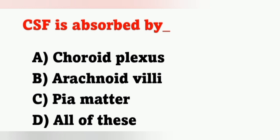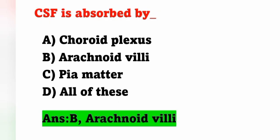Next question: CSF is absorbed by — options: option A, choroid plexus; option B, arachnoid villae; option C, pia mater; option D, all of these. Cerebrospinal fluid is secreted by the choroid plexus and absorbed by the arachnoid villae. Option B is the correct answer.